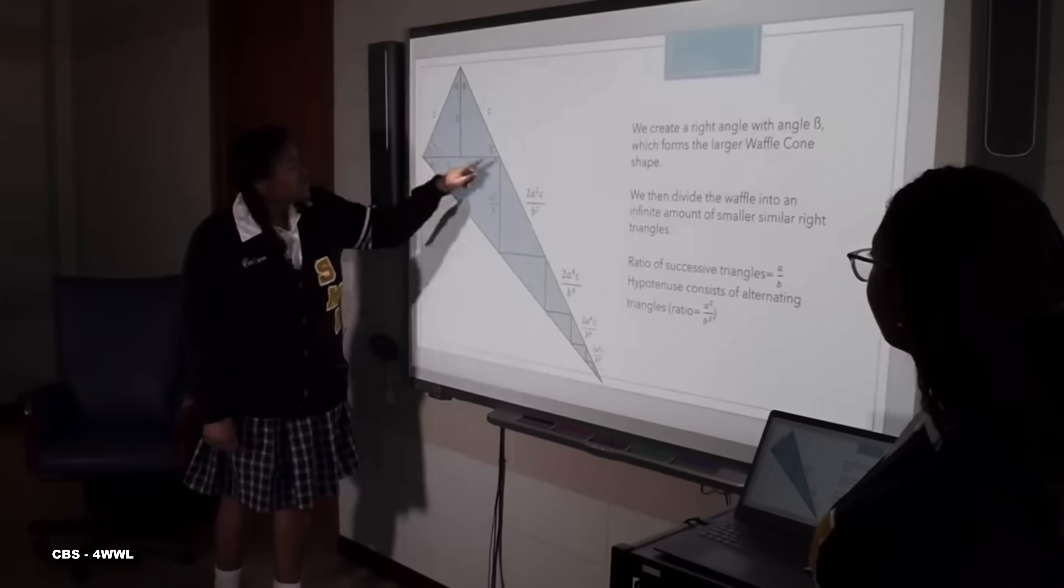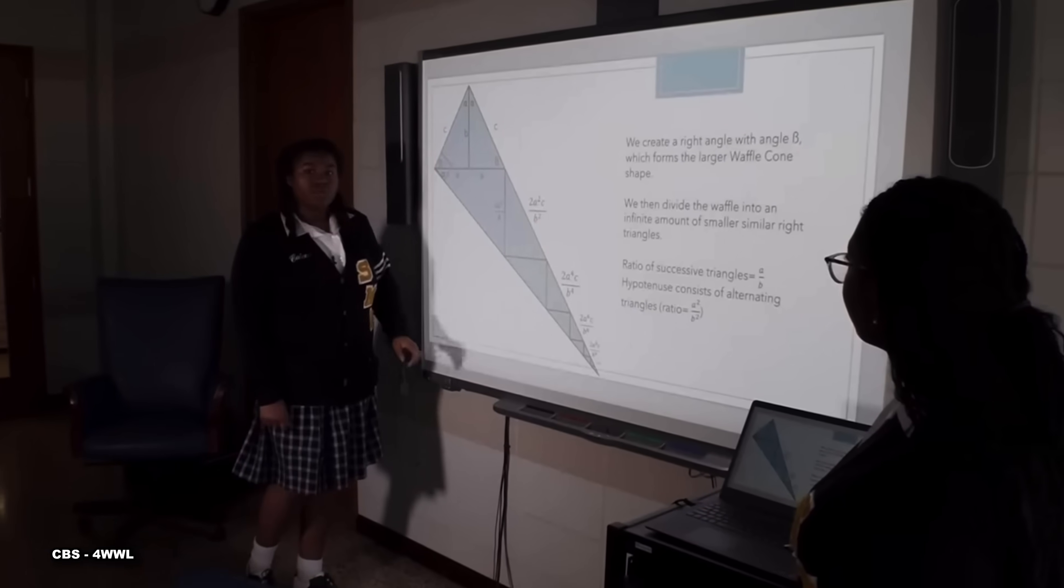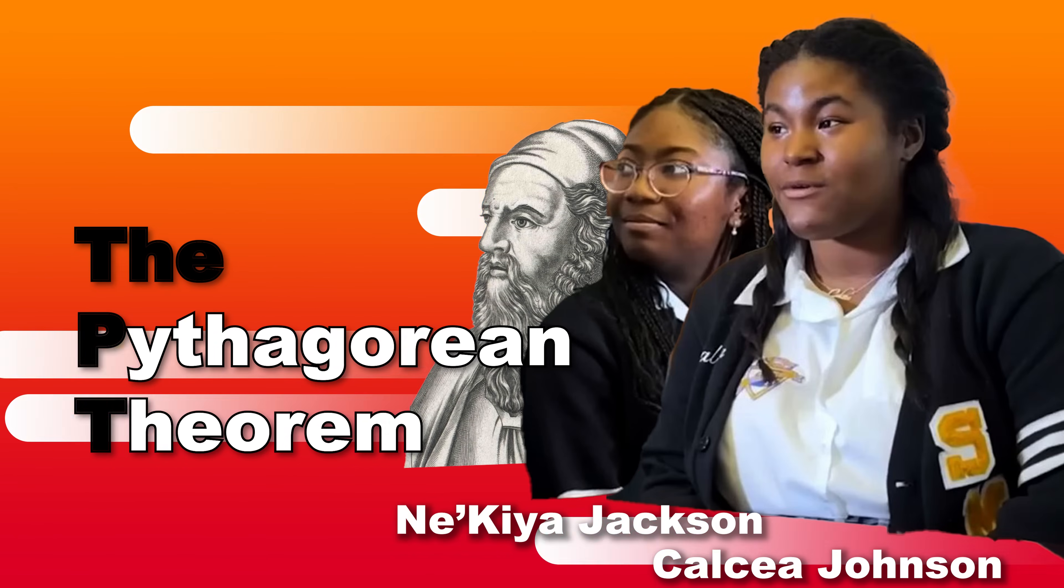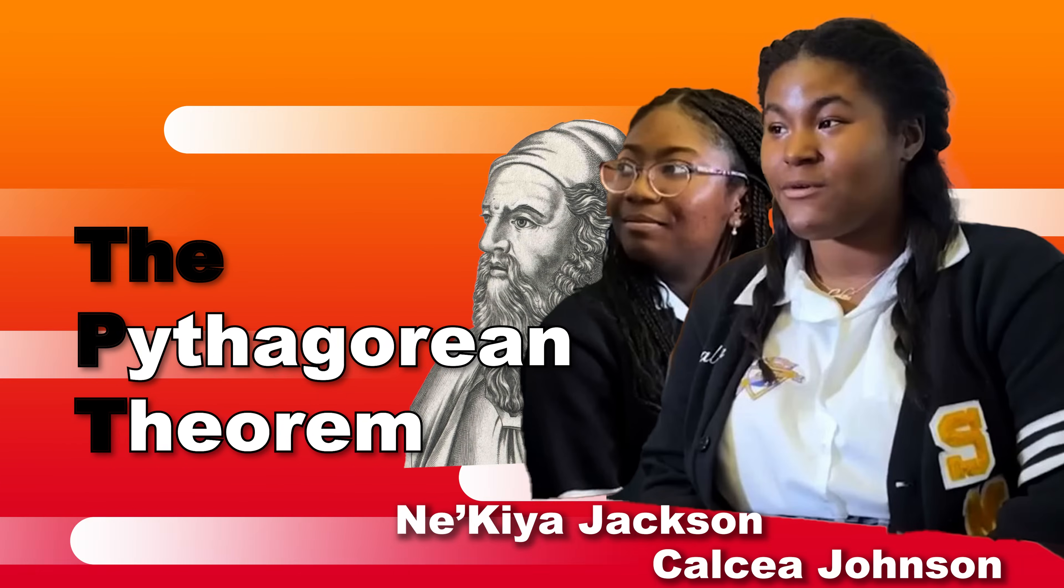Two high school students, Calcia Johnson and Akia Jackson at St. Mary's Academy, gave a new proof of the Pythagorean theorem. This is a remarkable feat for two kids in high school and they gave a presentation at the AMS Southeast Regional Conference held at Georgia Tech. The story has been picked up by several local news outlets. The reports that I saw, the presenters themselves could do with a bit of math review.